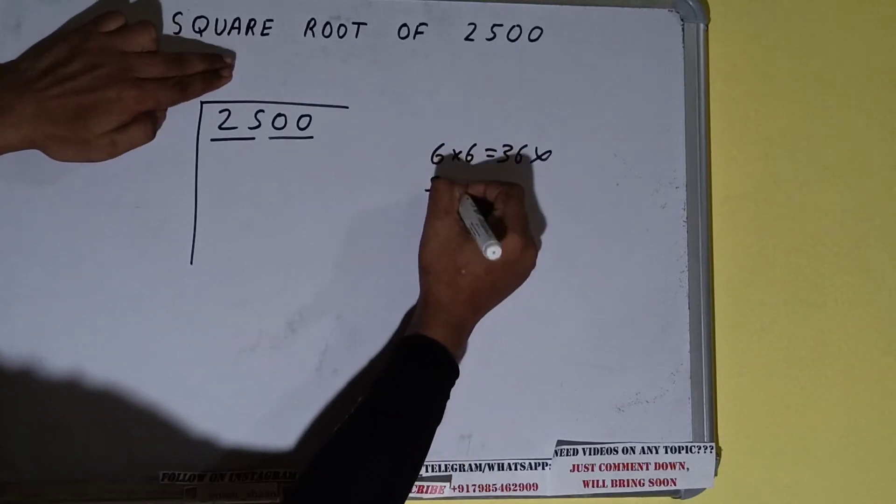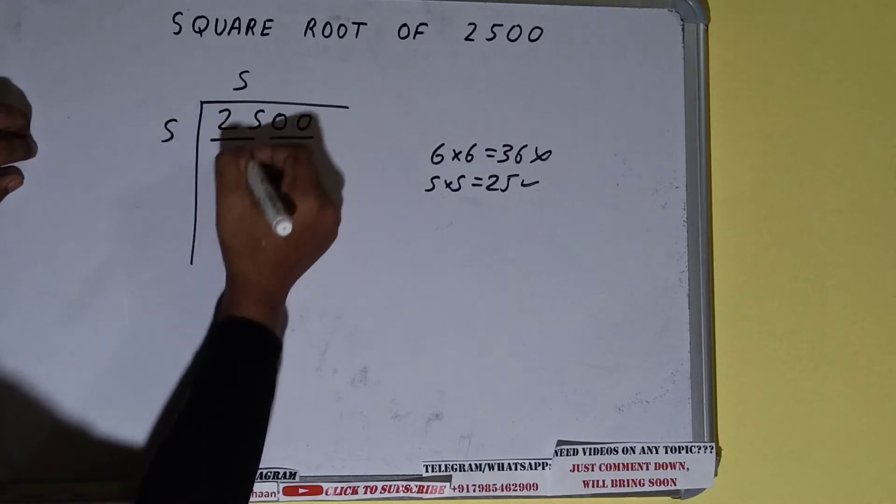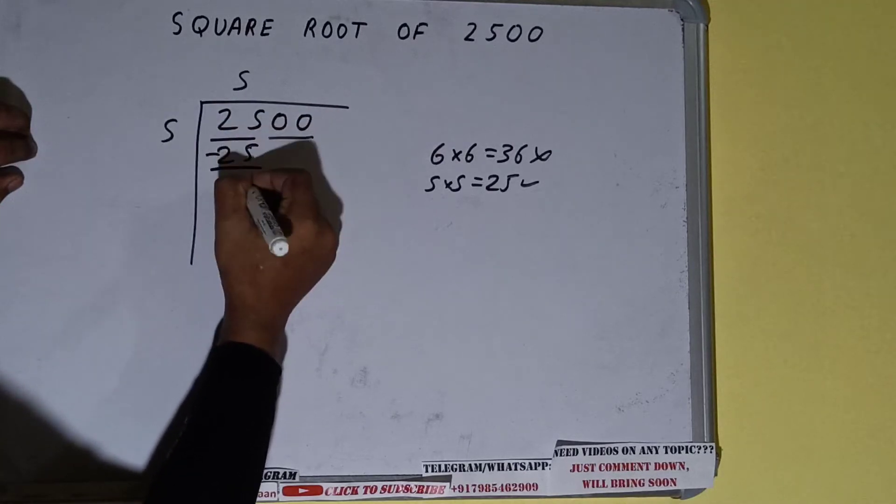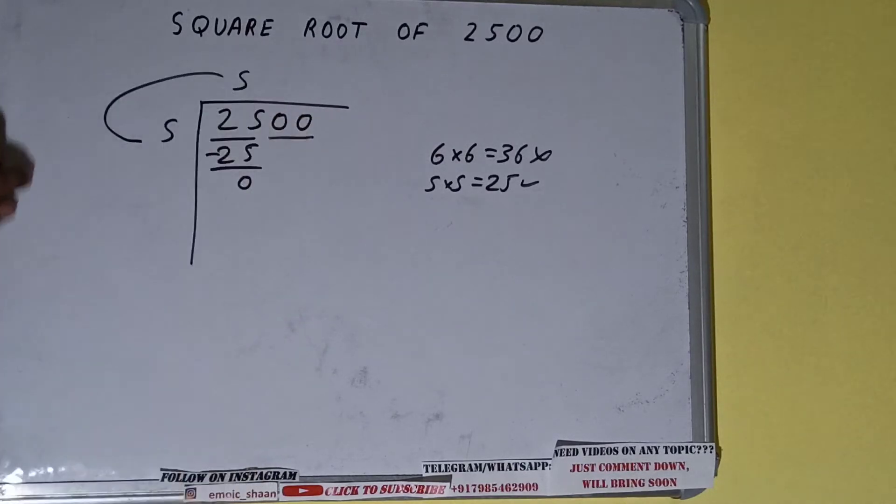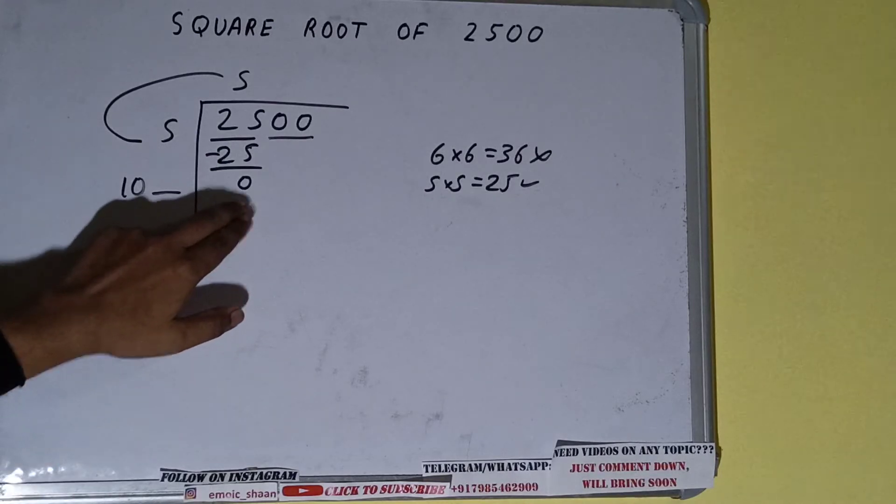So 5 here and 5 here, 25, subtract and zero will be left. Now we did 5 into 5, so add both. So 5 plus 5 will be 10. Write it here and keep one digit extra, and this number we need to make it big. But if you see, this is a pair of zeros, right, but this pair of zeros is the part of the number.